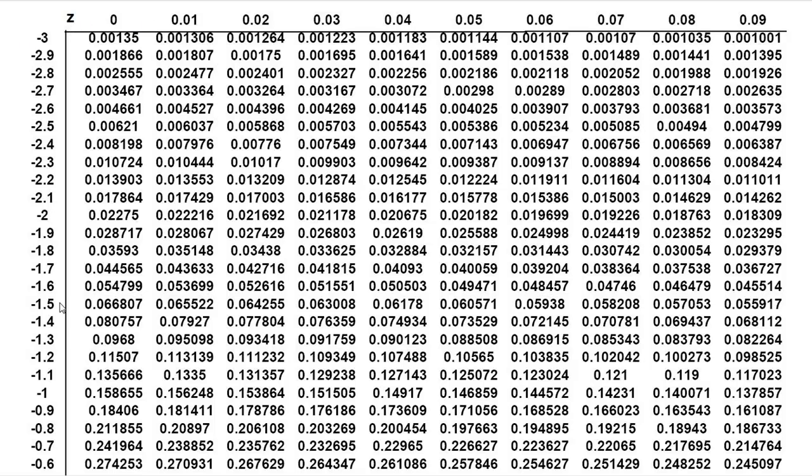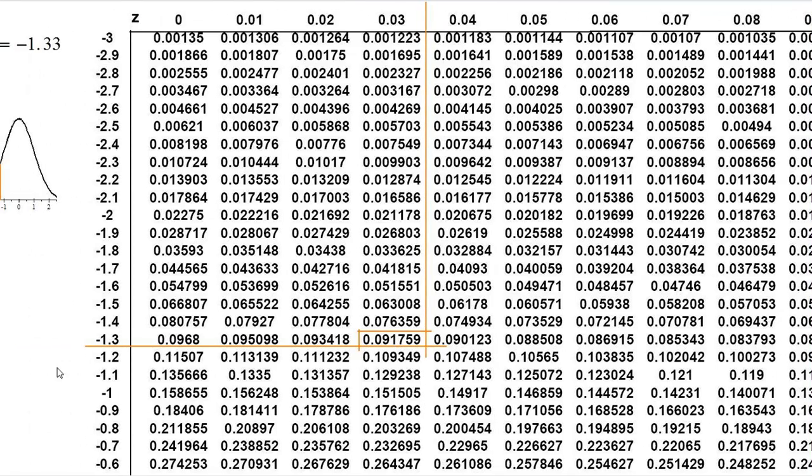These values on the margin are the values for z. Now, you are looking for negative 1.33. So negative 1.3 is right here. Locate that. And this is the area that we are trying to find to the left of negative 1.33. So you go to the right of negative 1.3 and locate the second digit here. So this value corresponds to negative 1.33, that is the area to the left of negative 1.33, which is 0.091759.